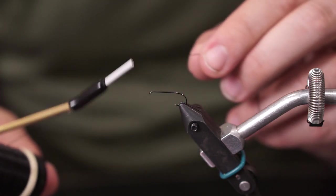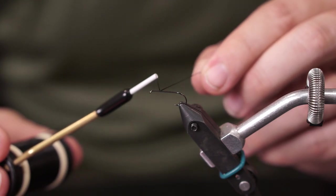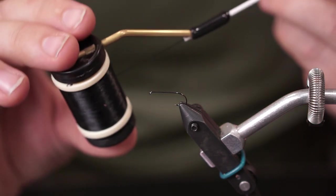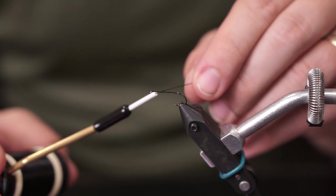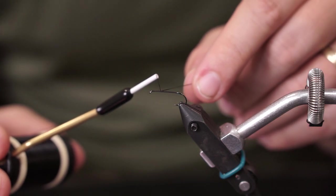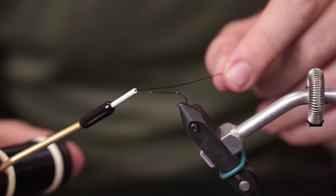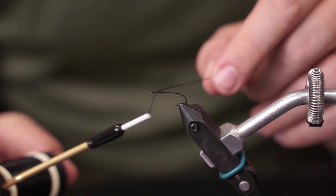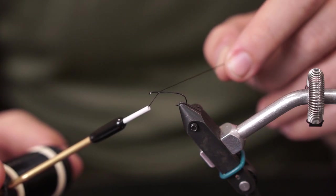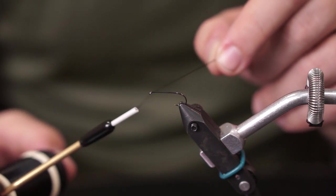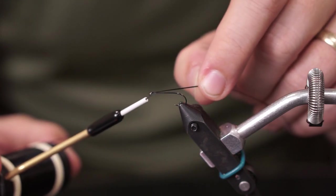For our thread today we're going to be using perhaps a different size thread than you may be used to for a dry fly pattern. This is a UTC 210 black. Now I've chosen black because we're going to be tying a black colored beetle today so you can change the thread color for your preference. But I'm using a 210 which you also may know as a G sized or some people will call it a bass size thread or a streamer size. It's basically a thicker thread diameter.